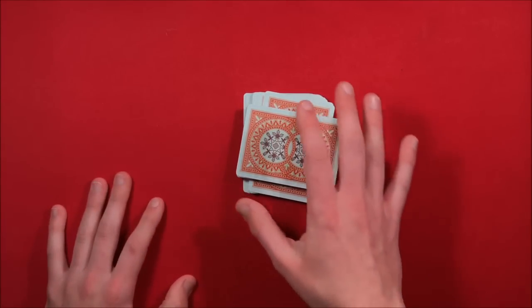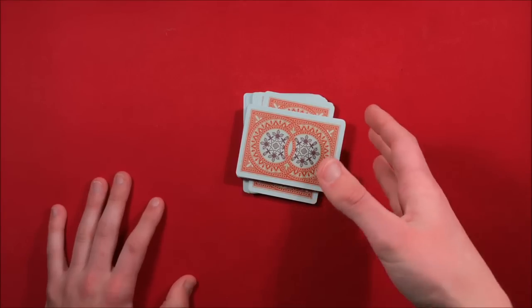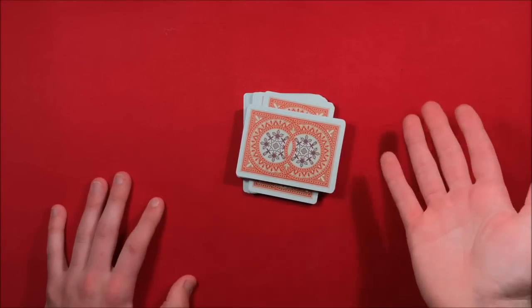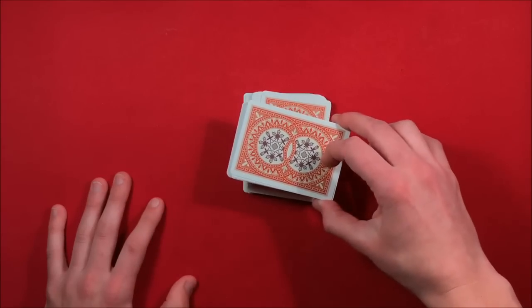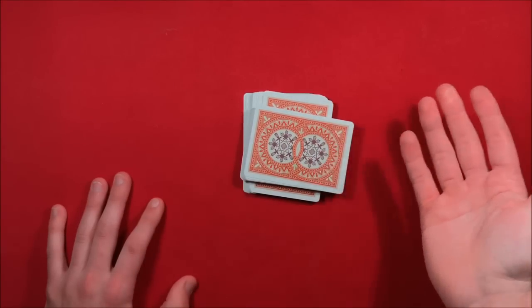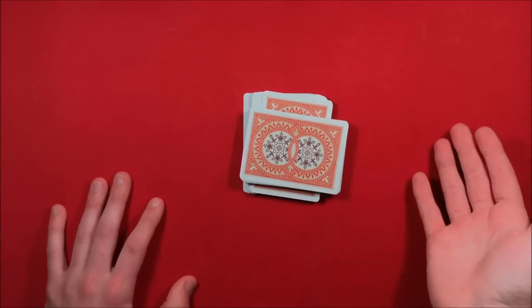When you place the bottom packet on top of the top, you kind of misdirect them and go over and recap the trick. This way the spectator has time to forget about the placement of these decks. If you misdirect them, talk to them a little bit about how they shuffled the deck, how you placed the card in the middle, and then shuffled the cards again...